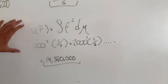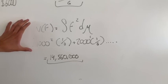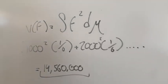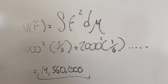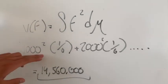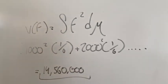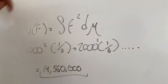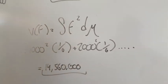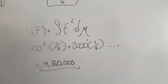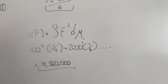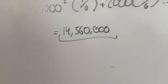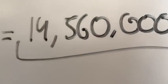We can also find the variance of the function. In this case, it would be 1,000² × μ, computed in the same way as the integral, and you'd end up with 14,560,000.